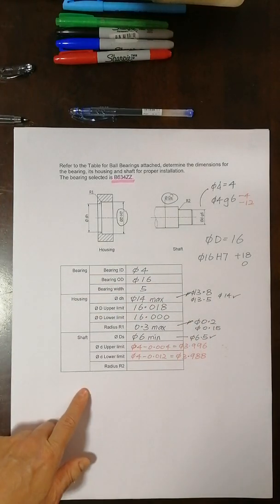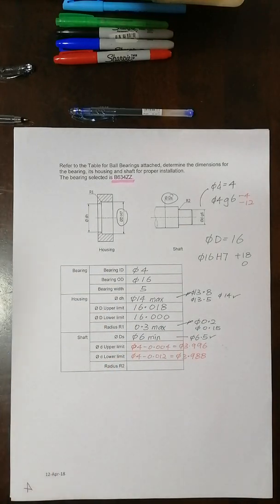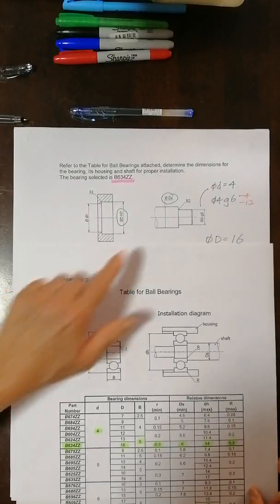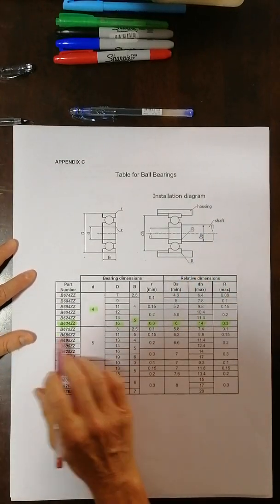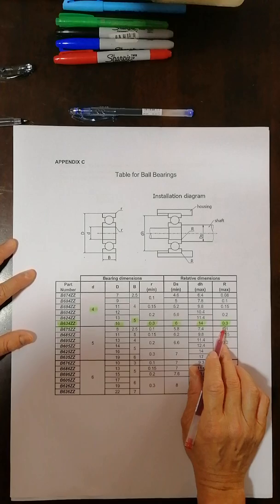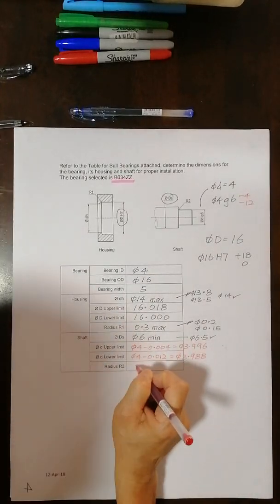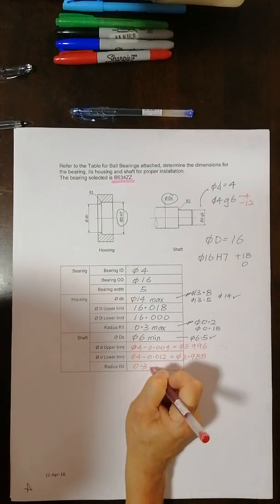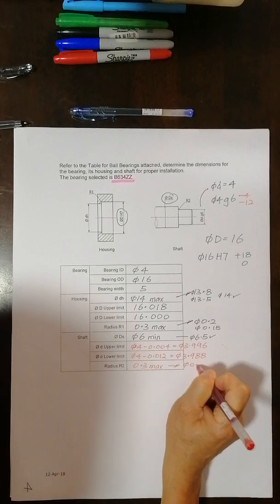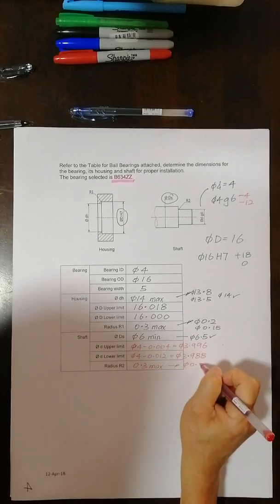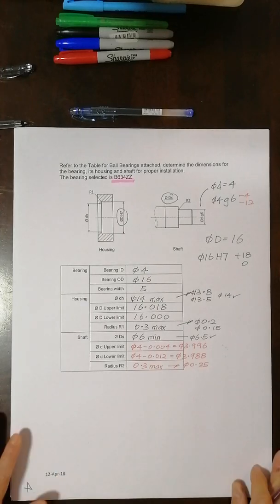And what about radius R2? I need to look back at radius R2. R2 is here. It says the R2 is same as 0.3, 0.3 maximum. So similarly here I got 0.3 maximum, which means I could put in any number like maybe 0.25. It shouldn't exceed 0.3. That's what it means.